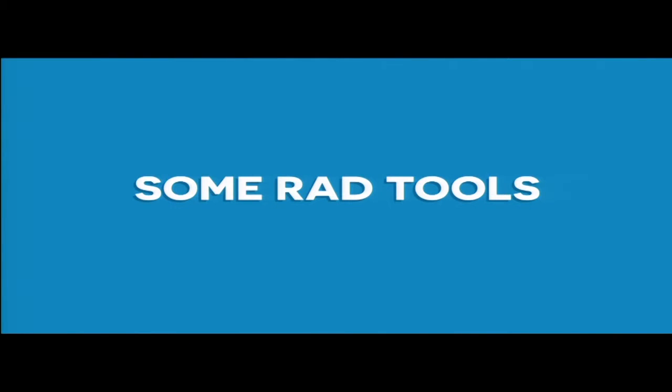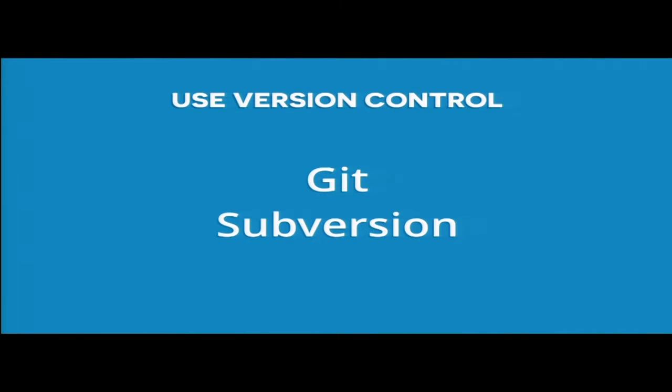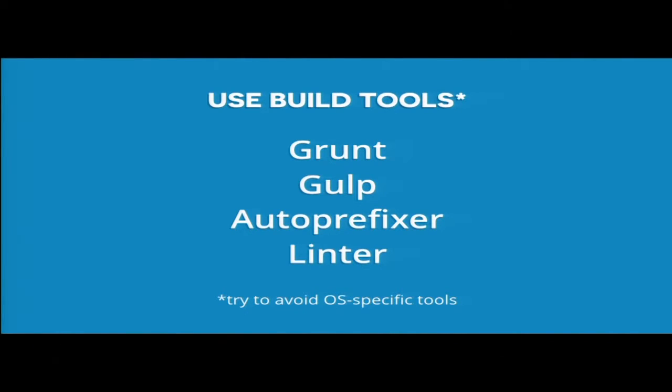To start off, I want to talk about the tools you need if you're going to do pretty big CSS projects. First of all, you've got to use version control — definite must-have. I don't care what you use: Git, Subversion, manually copying folders is okay I guess, but version control is big. Use some build tools — Gulp, Grunt — Google all of those. You're gonna want AutoPrefixer for sure and definitely some kind of linter.